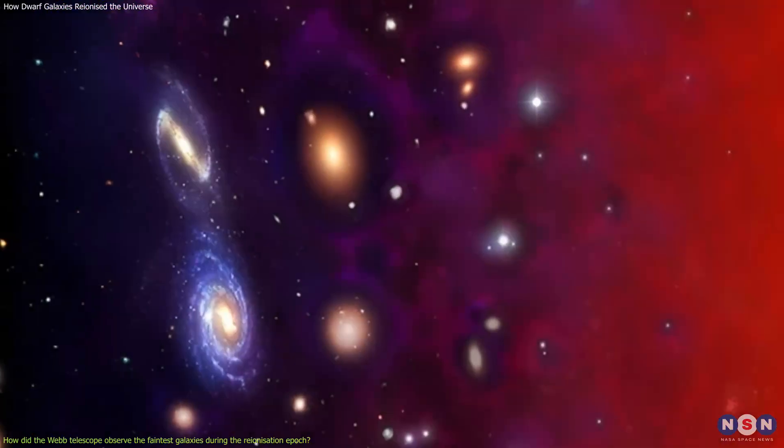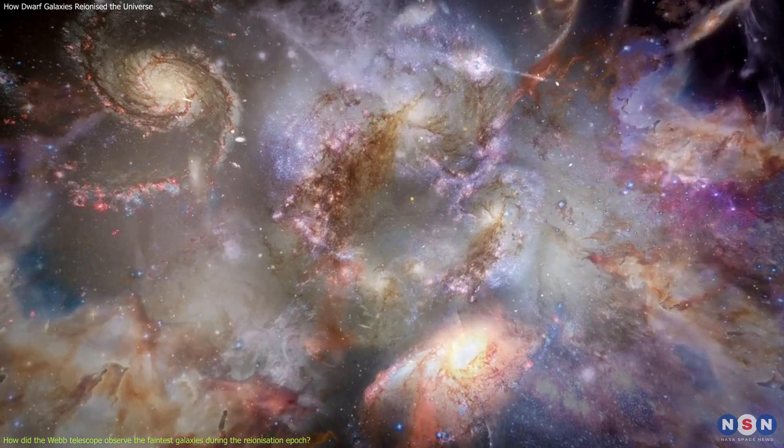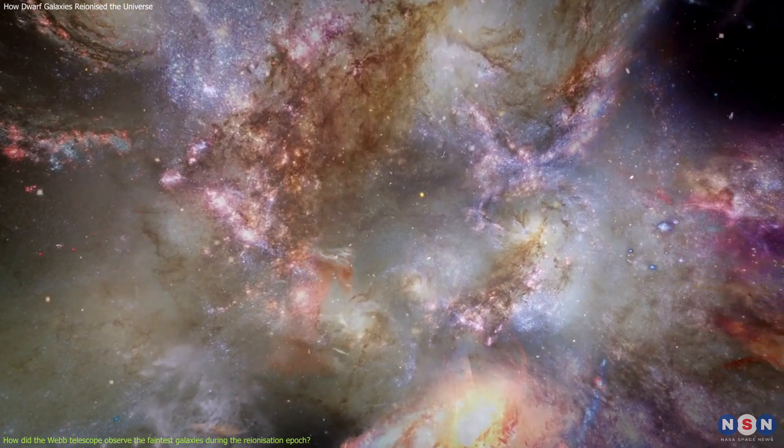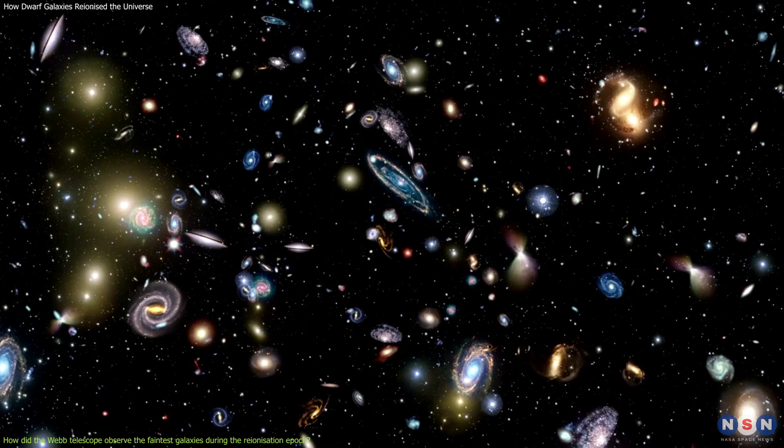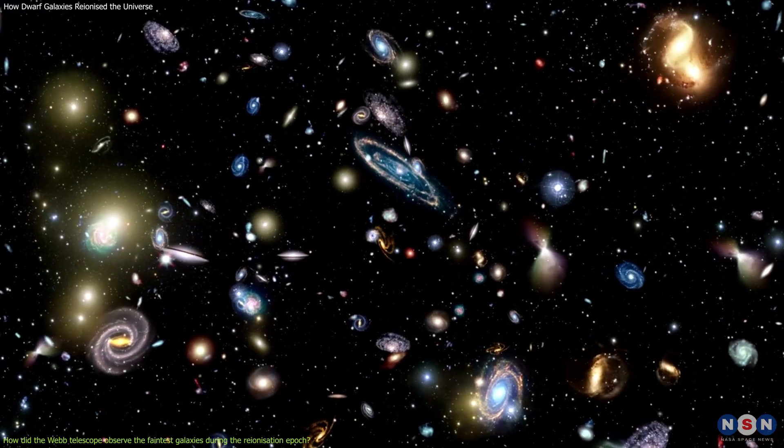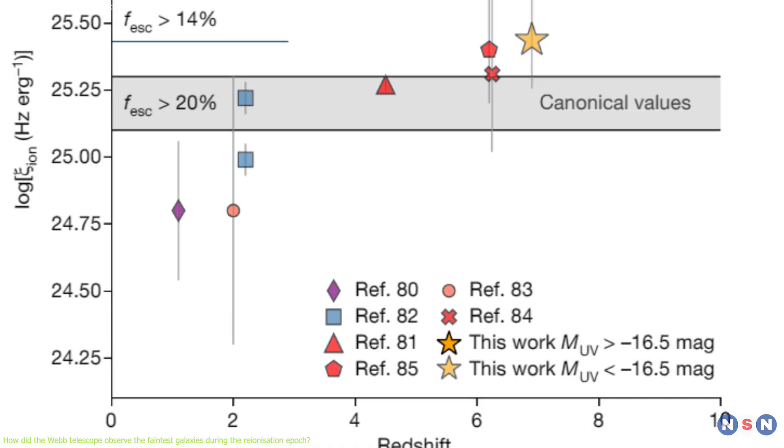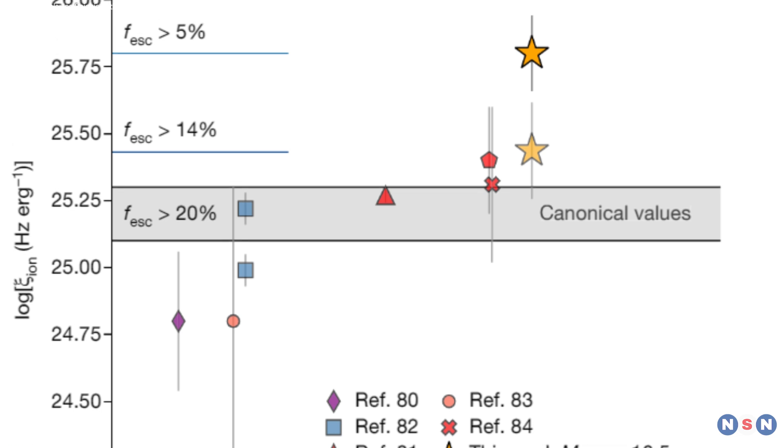However, not all of the ultraviolet light from the galaxies can reach the intergalactic medium, as some of it is absorbed or scattered by the dust and gas within the galaxies themselves. This is why we need to measure the escape fraction, which is the ratio of the ultraviolet light that escapes the galaxies to the total ultraviolet light that they produce. The higher the escape fraction, the more efficient the galaxies are at ionizing the universe.